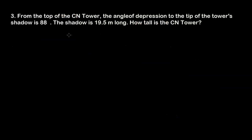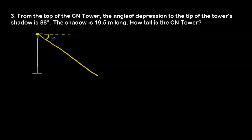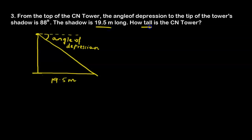The next example: from the top of the CN Tower, the angle of depression to the tip of the tower's shadow is 88 degrees. The shadow is 19.5 meters long. How tall is the CN Tower? The CN Tower stands straight on the ground. Someone standing on top looks down — how far below the viewpoint they look is the angle of depression. The shadow is 19.5 meters long on the ground. We need to find the height, and the angle of depression is 88 degrees, which is outside the triangle.